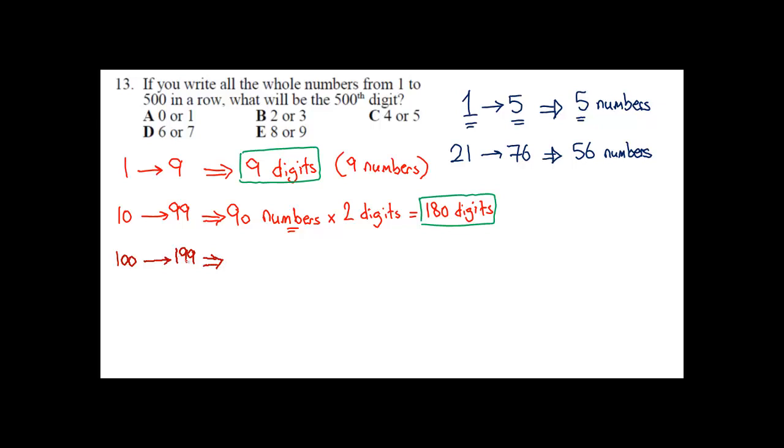Again, 199 minus 100 is 99 plus 1. That means there are 100 numbers from 100 to 199 inclusive. Each number has 3 digits. So 100 numbers times 3 digits each gives me 300 digits.